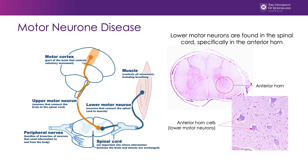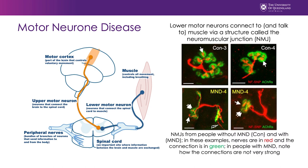What's important about these lower motor neurons is that they send long projections out towards your muscle. They effectively attach to the muscle and communicate information coming from the brain to the muscle. So working together, the neurons from the brain talk to the spinal cord, and the spinal cord then talks to the muscle, and ultimately this results in movement.